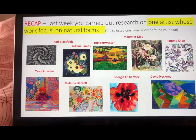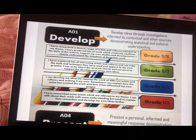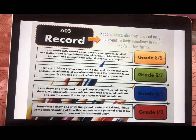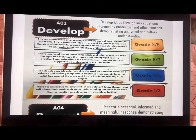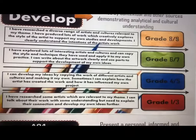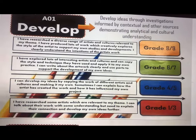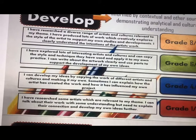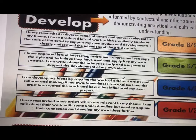The next thing I want to look at with you is this success and grading criteria. GCSE runs over AO1, AO2, AO3, and AO4, and you can have a good look at these in detail on your own. Today we are really focusing on AO1 — developing our ideas. If you look closely, you can see the top grades, and most of you should be aiming for grade six. Even if you're set at a five, I think you should aim for the six. It says: I've explored lots of interesting artists and cultures and can copy in the style and technique they have used and apply it to my own practice. I can write about the artwork clearly and use parts to support the development of my own ideas.